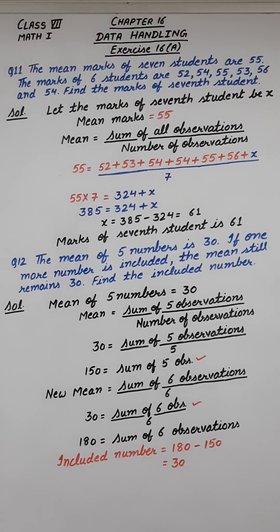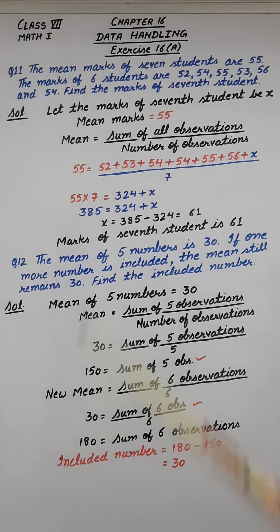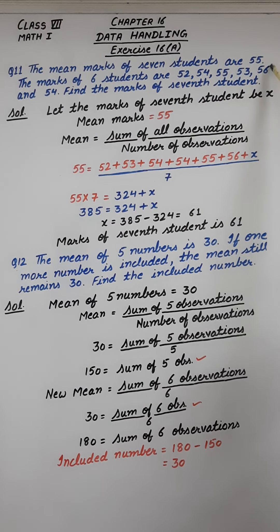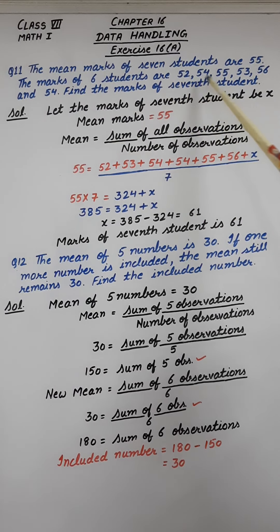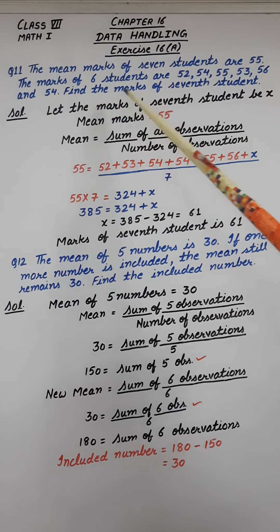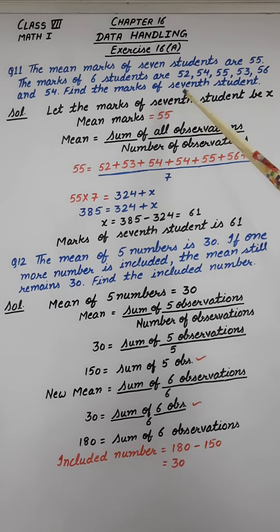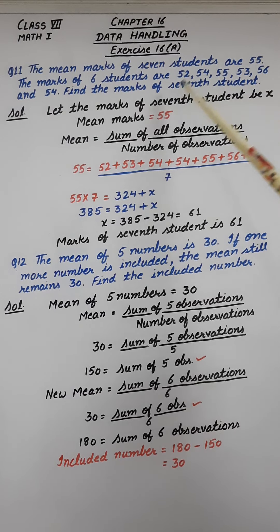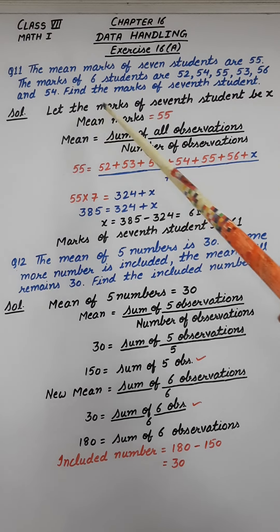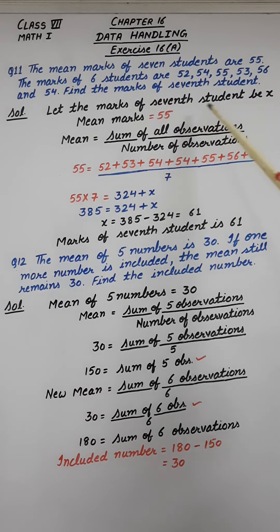Good morning children, let's continue with exercise 16a, question number 11. The mean marks of 7 students are 55, marks of 6 students are given and we have to calculate the marks of the 7th student. First of all, we will assume that the marks of the 7th student be x.